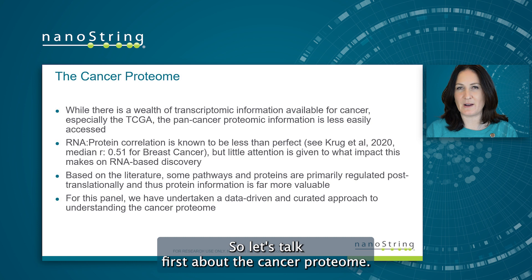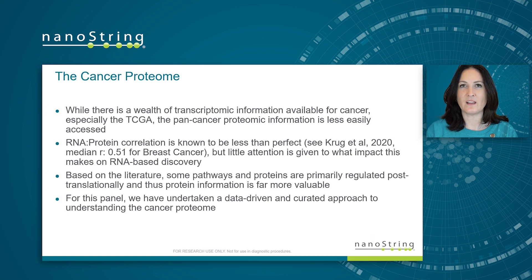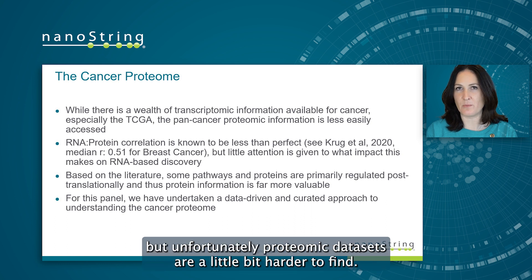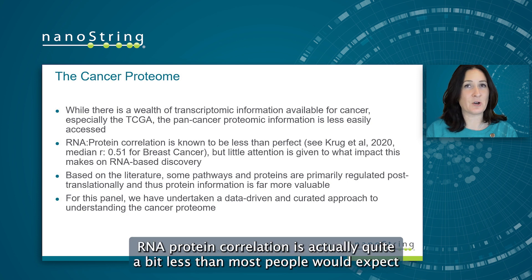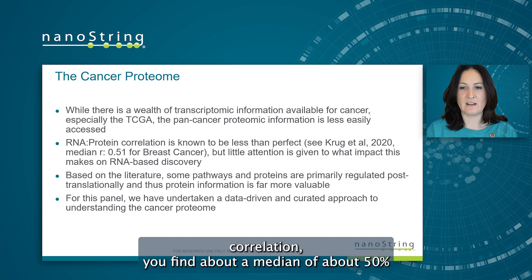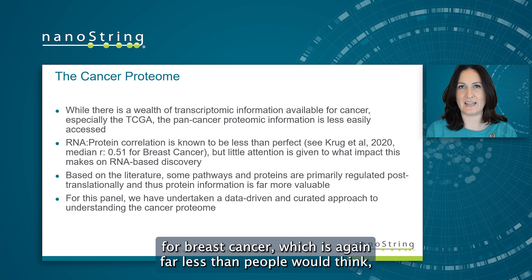So let's talk first about the cancer proteome. There is a wealth of information about the cancer transcriptome, but unfortunately proteomic data sets are a little bit harder to find. RNA-protein correlation is actually quite a bit less than most people would expect. If you do a data-driven analysis of RNA-protein correlation, you find about a median of about 50% for breast cancer, which is far less than people would think.